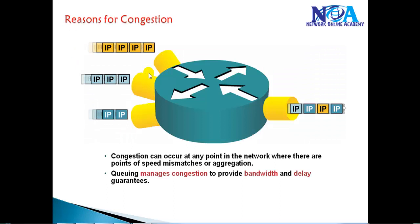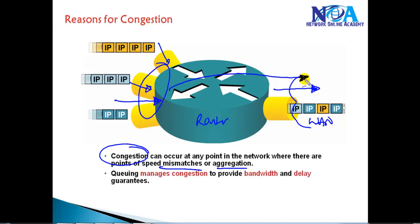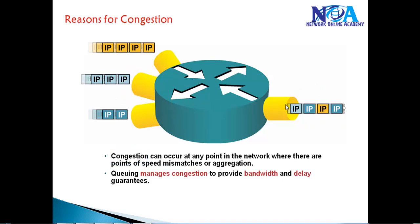The first thing we will try to understand is the reasons for congestion. Take an example: a router is forwarding traffic, receiving traffic on multiple interfaces and supposed to send it out on the WAN interface. Congestion normally happens when you have two or more interfaces receiving traffic and you are supposed to send it on the WAN interface — maybe from two different branch offices or from the LAN interface. Congestion generally occurs at any point in the network where there is a speed mismatch or aggregation. Here you can see there is aggregation of three links all sending over one common link, and in this kind of scenario there is a possibility of congestion.